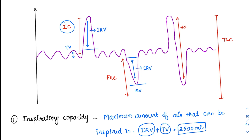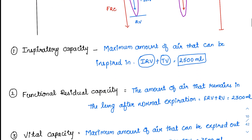Now coming to the functional residual capacity. During normal breathing, after expiration, whatever air remains inside the lung is called as the functional residual capacity — functionally, this is in the residual state and is not taken outside the lung. It is calculated by adding ERV and the residual volume, giving a value of 2300 ml.